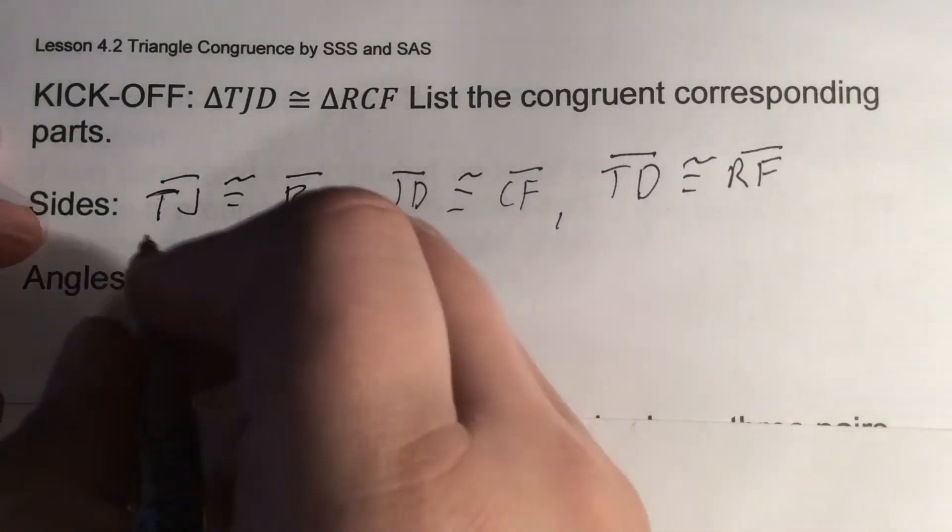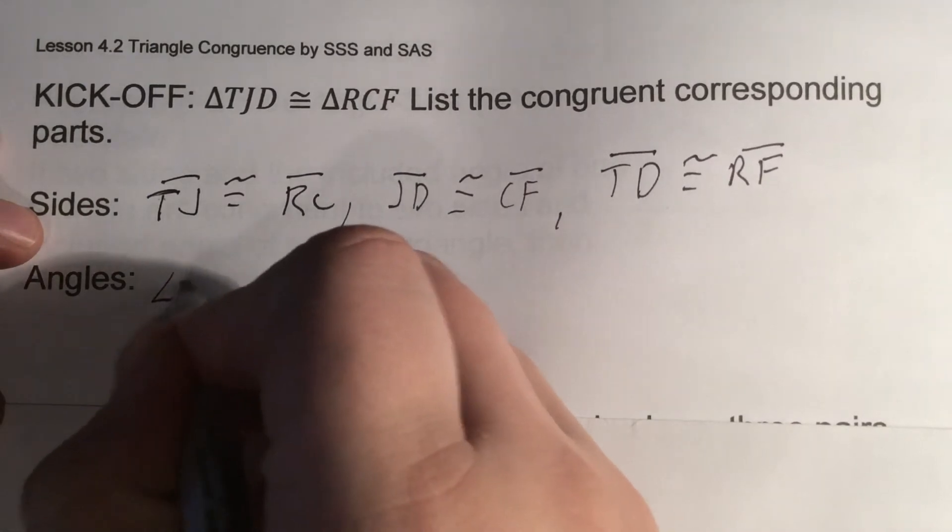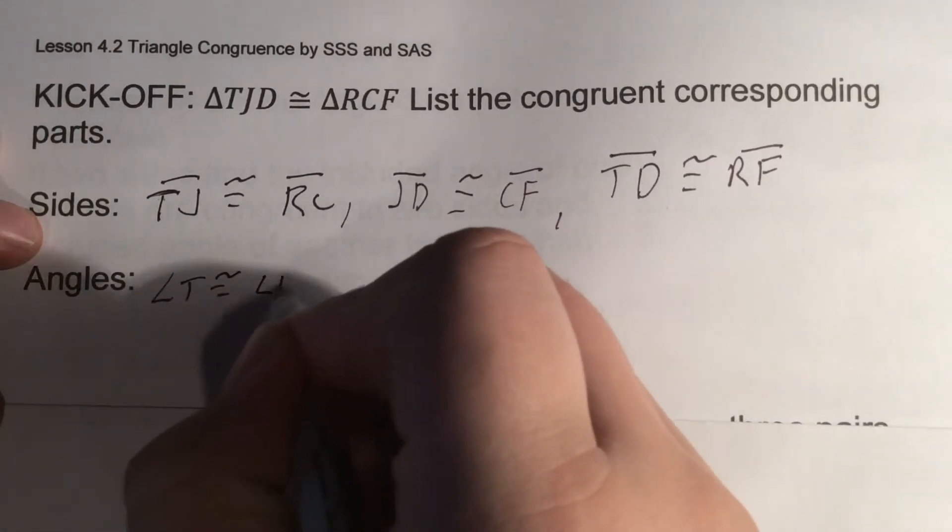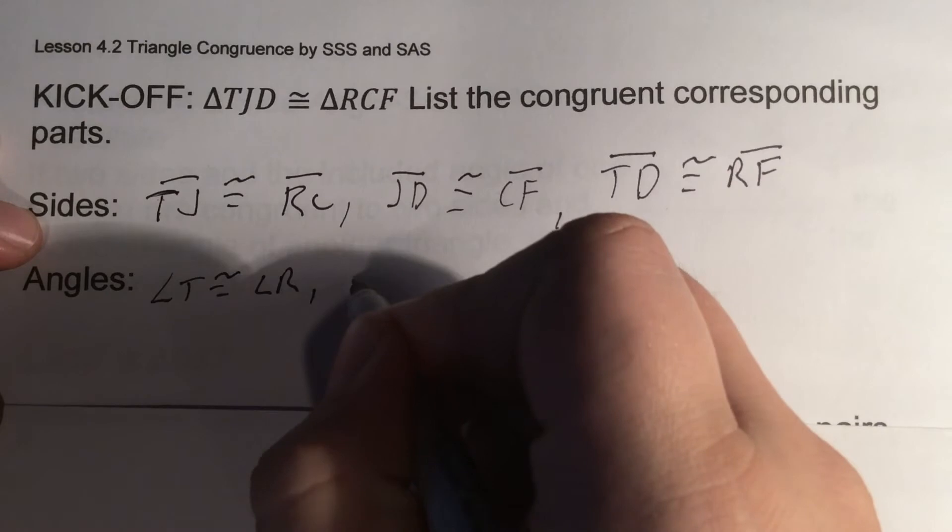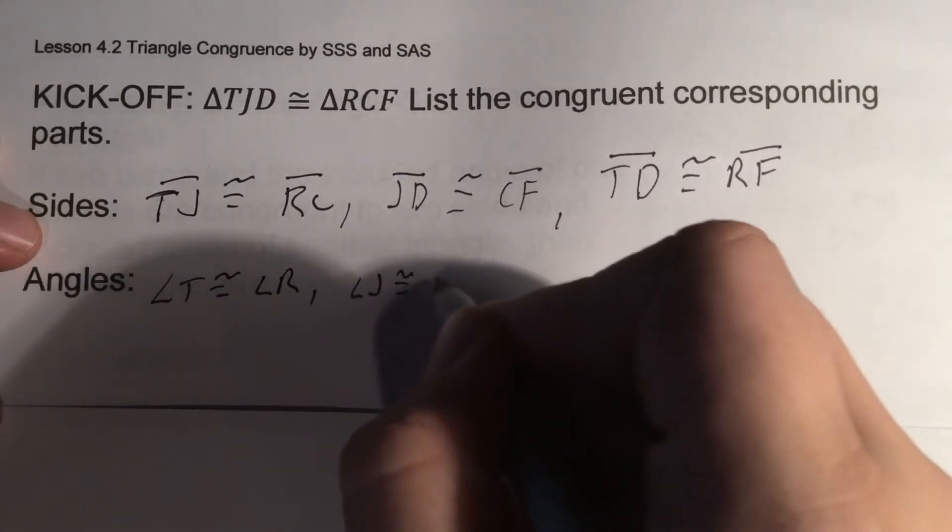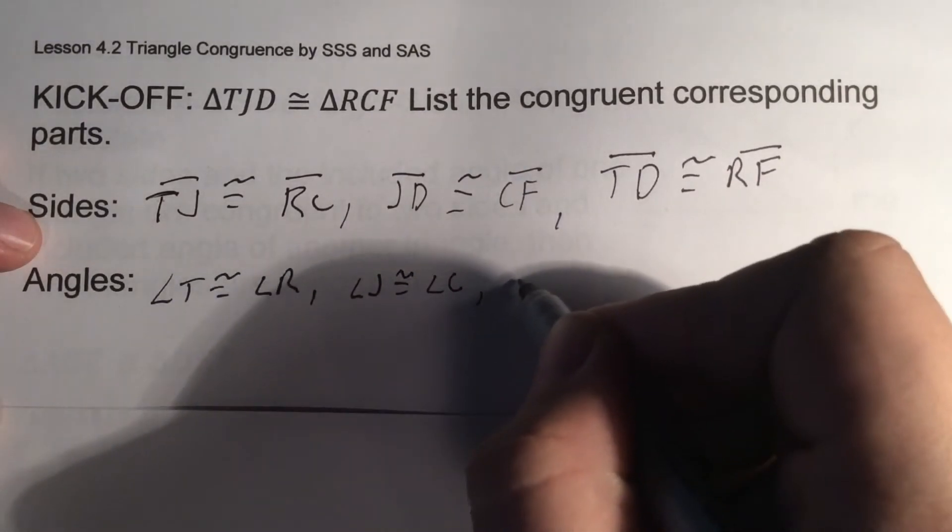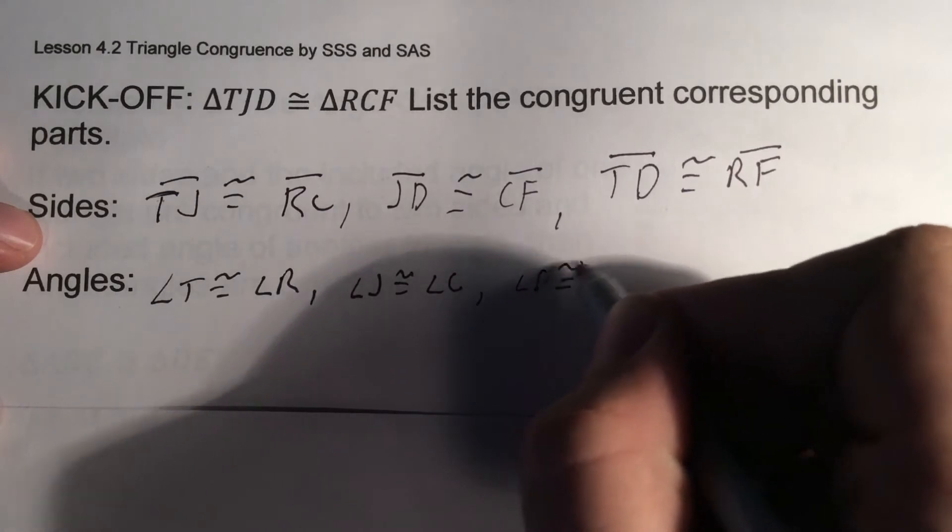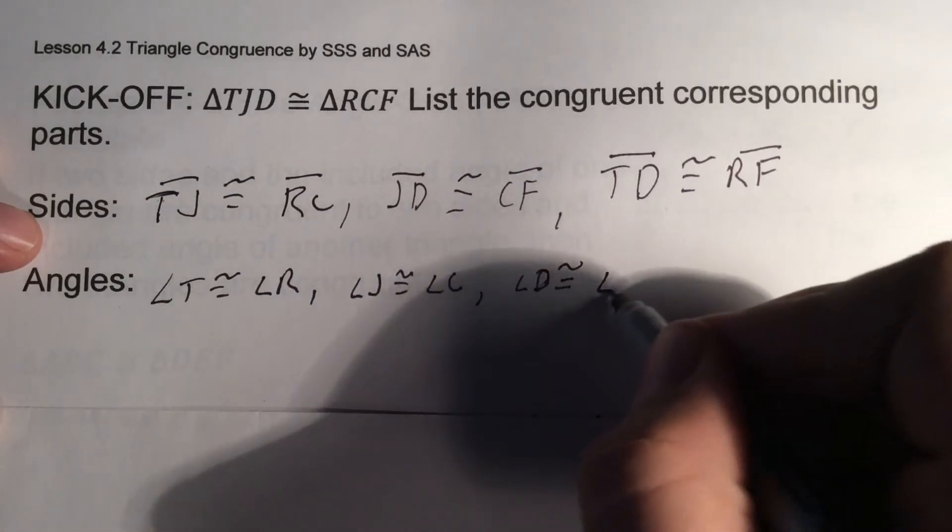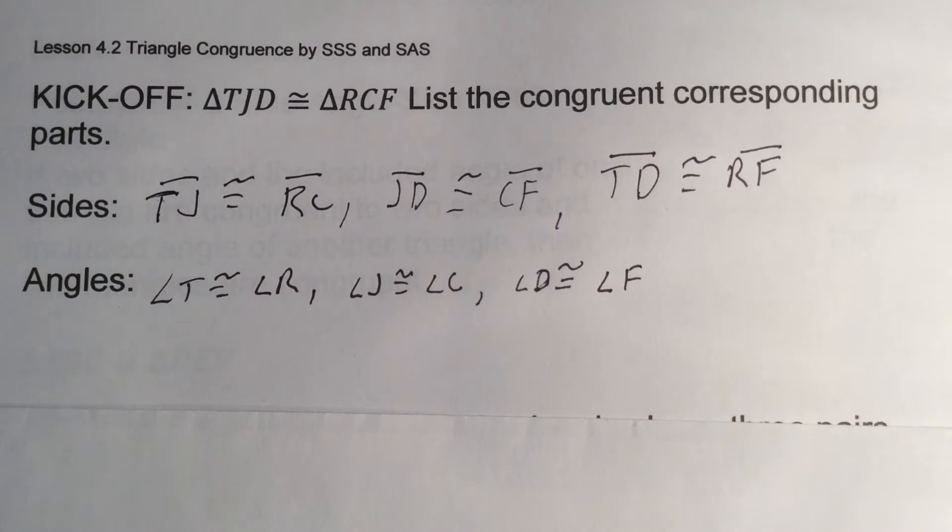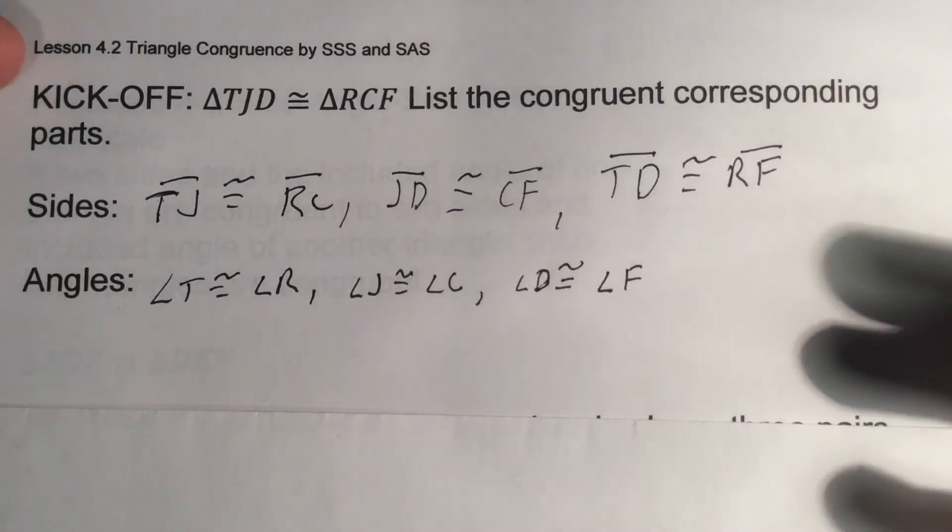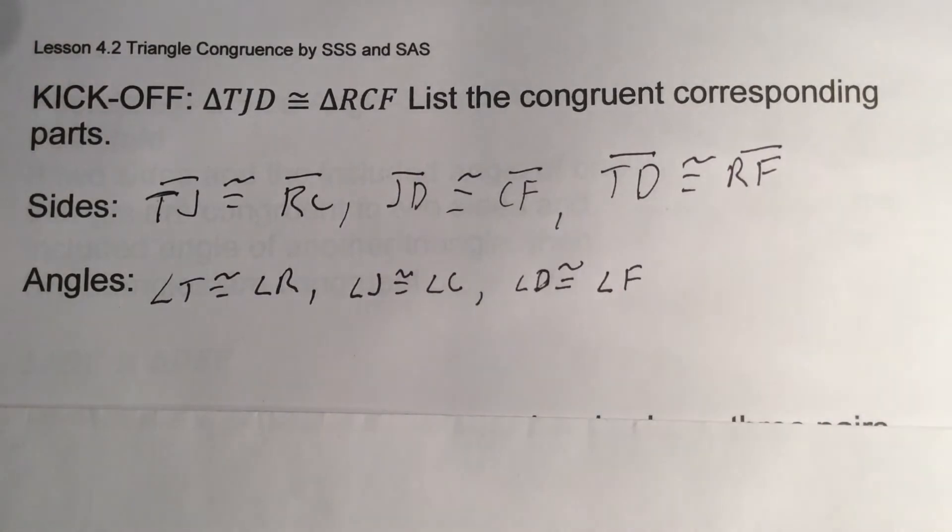Angles, same idea. So the first one, angle T congruent to angle R. Angle J congruent to angle C. And then angle D congruent to angle F. So, knowing the triangles are congruent, we're going to have three pairs of sides that are congruent and three pairs of angles that are congruent. We have our three sides, three sets of angles, we're good.